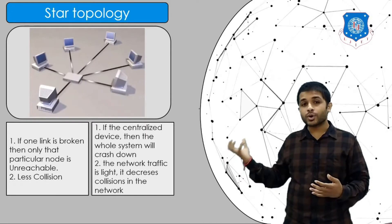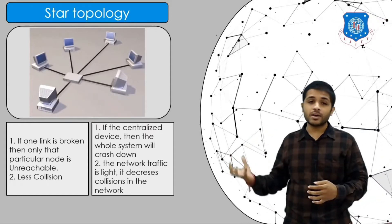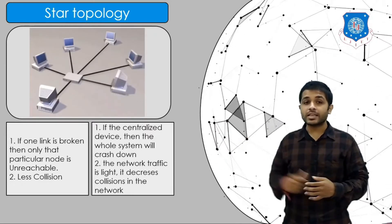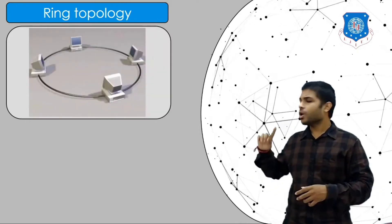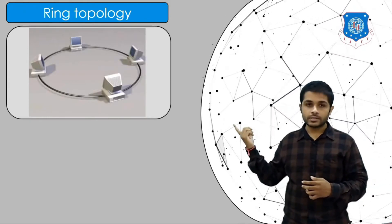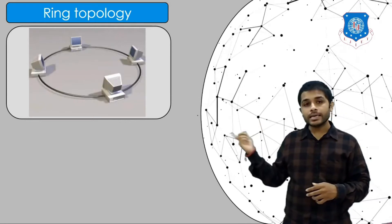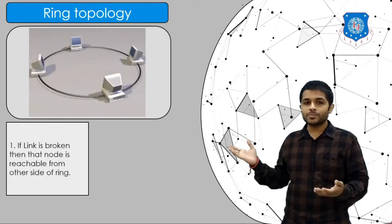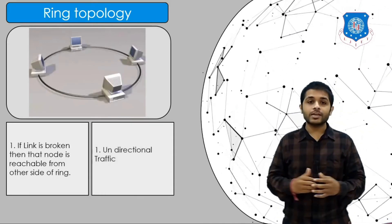All traffic goes through the centralized device, so if all devices send data at the same time, there will be heavy traffic at that device, and if it exceeds capacity it will fail. The next topology is ring topology, where all devices are connected in the form of a ring. Communication can be clockwise or anti-clockwise. If one link is broken, data can be sent the other way, so the destination is still reachable. The disadvantage is unidirectional traffic.